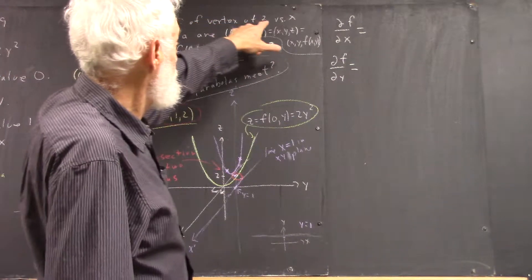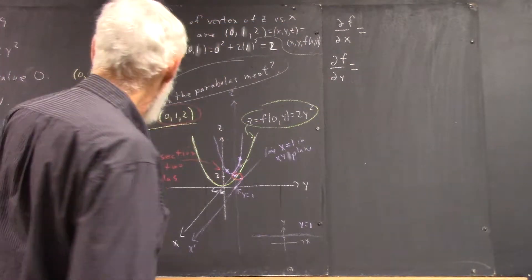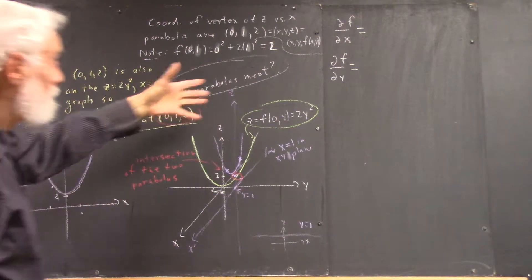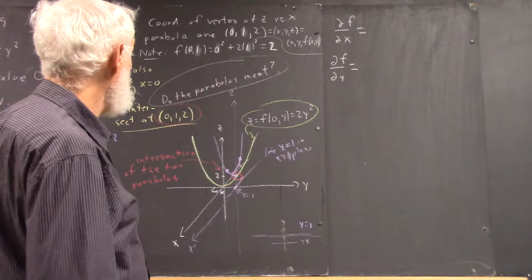So the coordinates of the vertex of the Z versus X parabola that we've drawn, this parabola put into the context of our three-dimensional space.